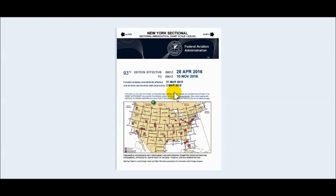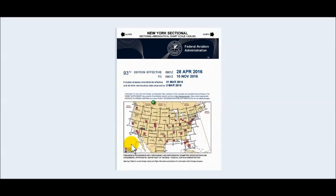Don't fly with an outdated map or sectional chart. You can see the effective date of the chart here — it goes from 28 April 2016 to the 10th of November 2016. So this is what you would actually fly with as a pilot. If you do have outdated maps, I would just use them for training purposes only — don't throw them away. As a flight instructor there are a lot of uses for them, but you would cut this section out to let your students know that this is an outdated map.